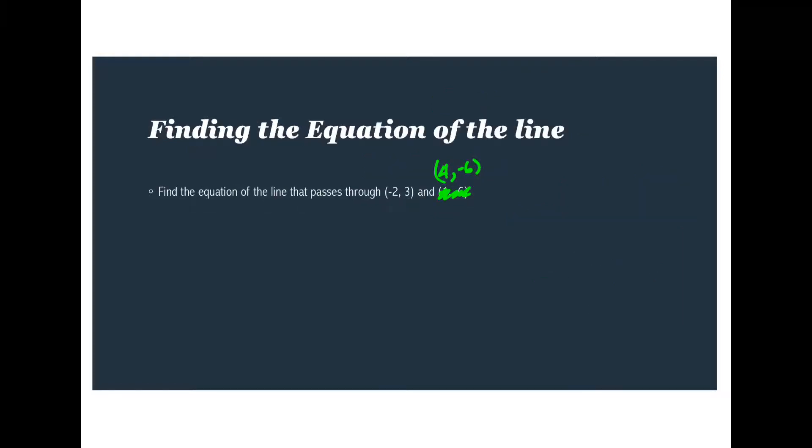So now that I have the slope, we found the slope between these two points is negative three halves. How could we actually find the whole equation? We know that in the slope intercept form of a linear equation, there's two pieces to this puzzle that we need. One is to know the slope. Well, we found that. And the other is to know the y-intercept.